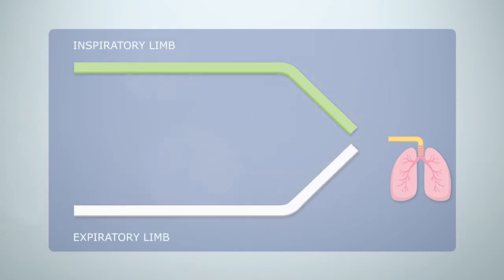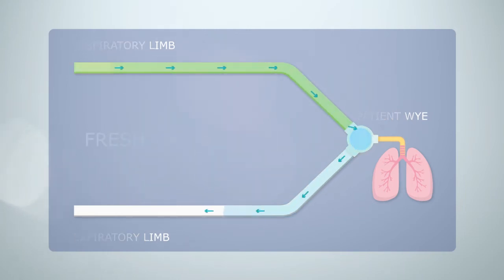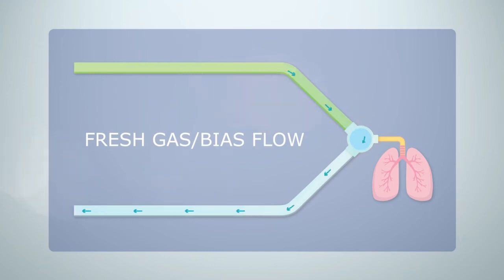A typical neonatal patient circuit consists of an inspiratory limb and an expiratory limb. A patient Y allows the circuit to be connected to the patient's ET tube and a constant 8 litres of heated and humidified blended gas is fed through the circuit. This is known as the fresh gas or bias flow and usually exits the rear of the ventilator without having any effect on the patient.